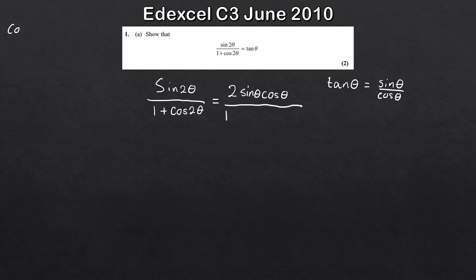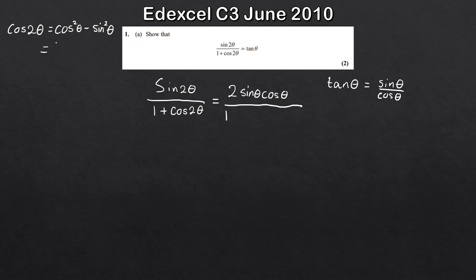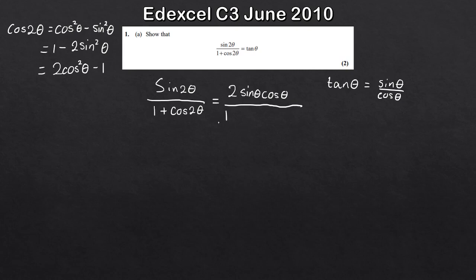The easiest way to remember cos 2θ is that it can be expressed as cos²θ minus sin²θ. If you can remember that, you can easily derive the next two versions using the fact that sin²θ plus cos²θ equals 1. So you can substitute in to obtain: cos 2θ equals 1 minus 2sin²θ, or cos 2θ equals 2cos²θ minus 1. Those are the three different ways we can express cos 2θ.